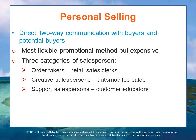There are three distinct categories of salesperson: order takers, such as retail sales clerks or route salespeople; creative salespersons, such as automobile, furniture, and insurance salespeople; and support salespeople, such as customer educators, who usually do not take orders but provide marketing collateral information to salespeople so they can educate consumers and eventually get the order closed.